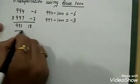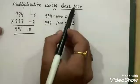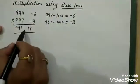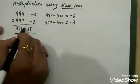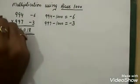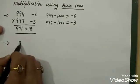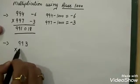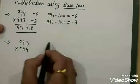Minus minus changes to plus. But since we are using base 1000, where there are 3 zeros, we need a 3-digit number. 18 is only 2 digits, so we place a leading zero to get 018. The final answer is 991018. Let's take another example: 993 multiply 994.